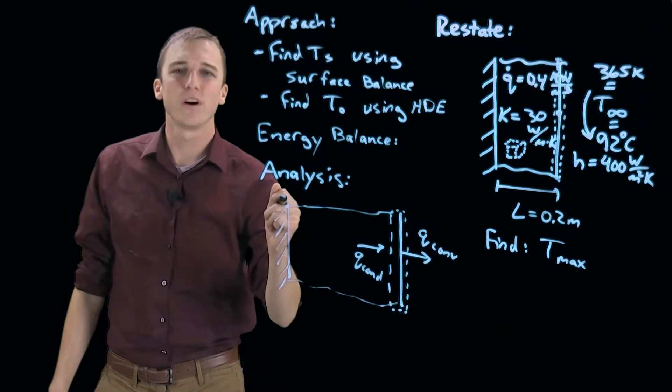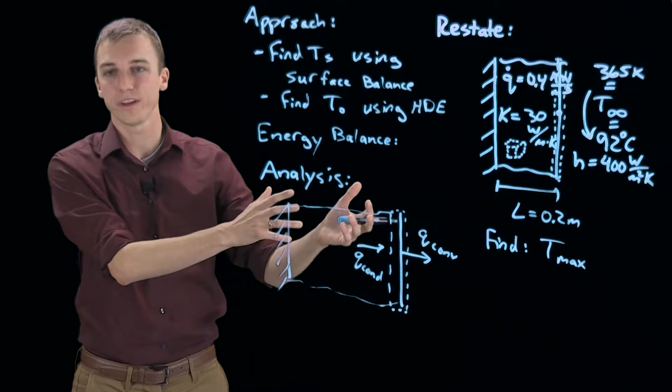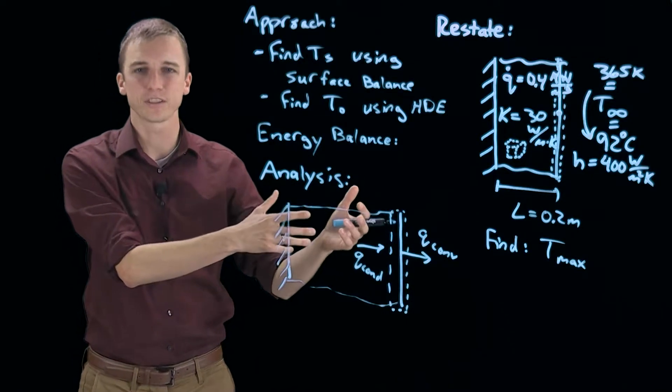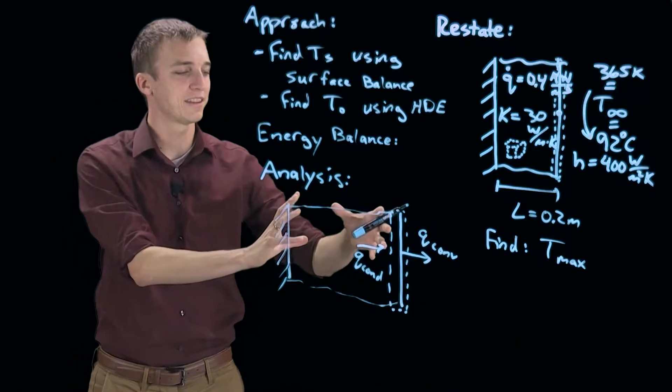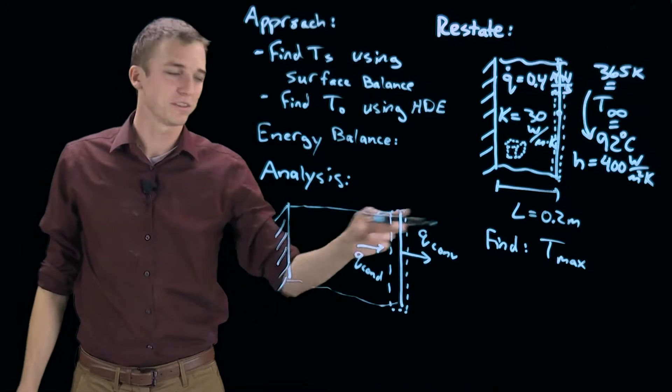Now we know heat is flowing this direction because energy is being generated inside the wall and this side of the wall is insulated. So since energy is being produced, thermal energy being produced say from electrical energy, we need to take that energy and it must leave. Because it can't go left it has to go out this side.